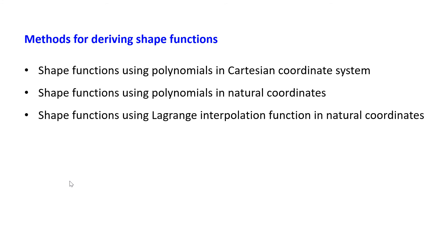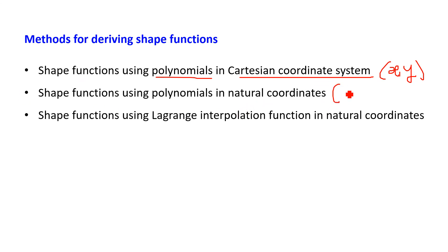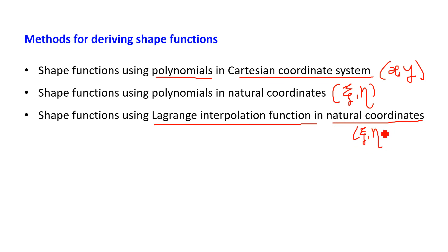There are three different methods for deriving shape functions. First, shape functions using polynomials in the Cartesian coordinate system (x, y). Second, shape functions using polynomials in a natural coordinate system (ξ, η). Third, shape functions using Lagrangian interpolation functions in the natural coordinate system — also in the ξ, η system — using an empirical formula developed by Lagrange to find the shape functions.